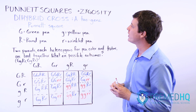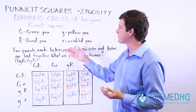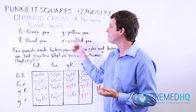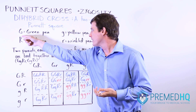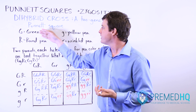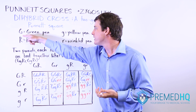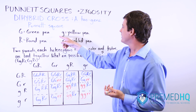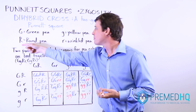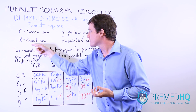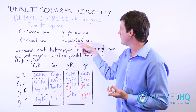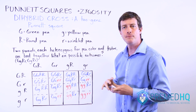We'll use Mendel's peas as an example. The capital G is the green pea, and that's the dominant color, while the lowercase g is a yellow pea. The capital R refers to the texture — it's a round pea — whereas the lowercase r is a wrinkled pea.